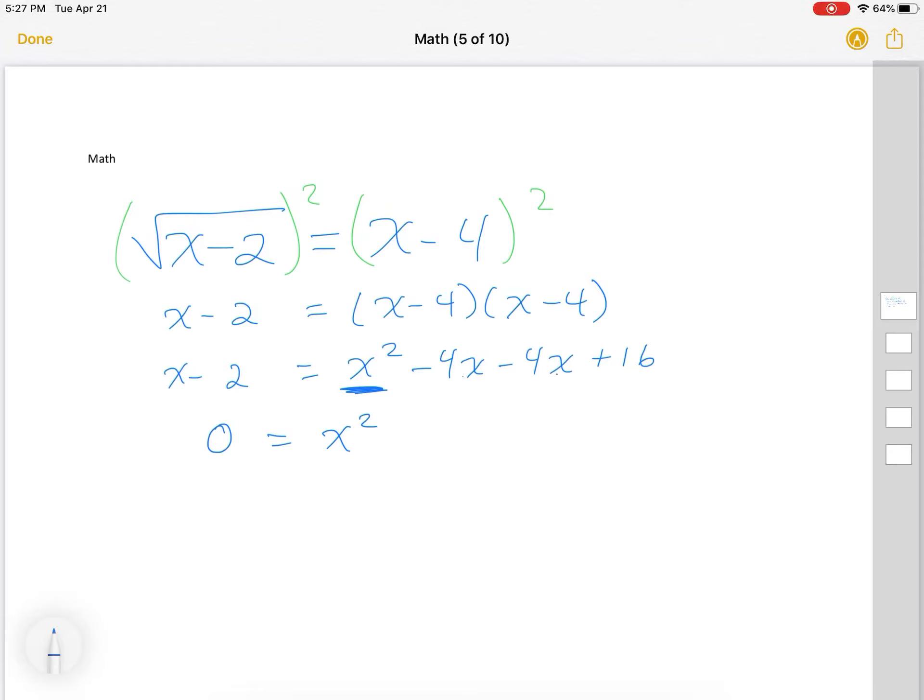What I have to do is move everything over to one side and factor. So I'm going to have x squared. I have negative 4x and negative 4x, which is negative 8x plus 16. And when I move these two over, I get negative x plus 2.